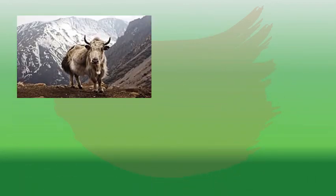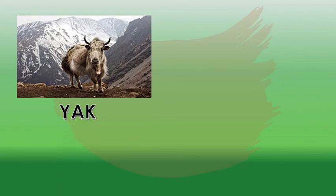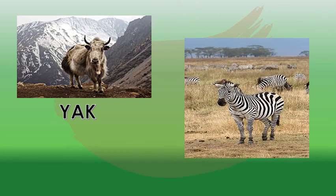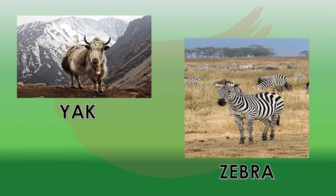The next picture is yak. What is this? Yak. And what is this? This is zebra. What is this? This is zebra.